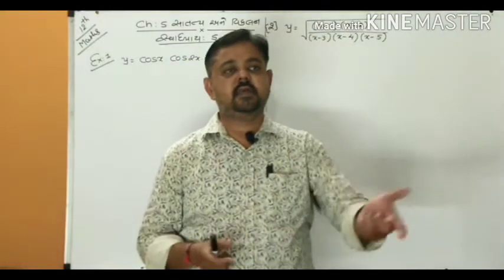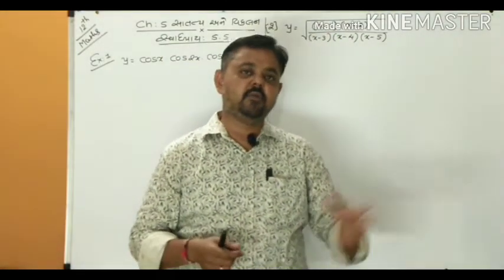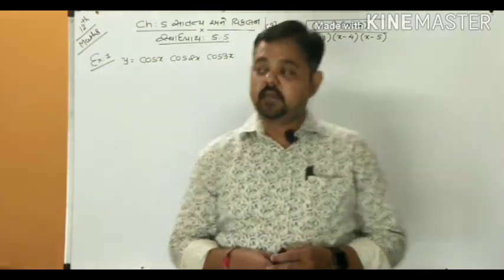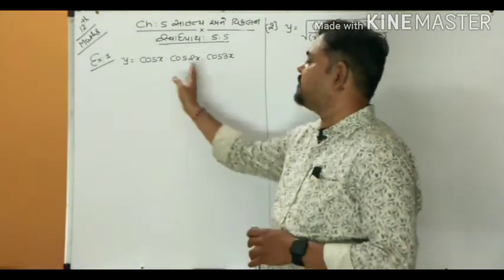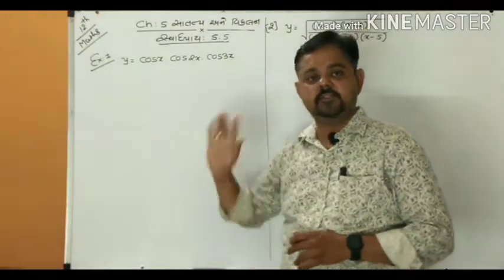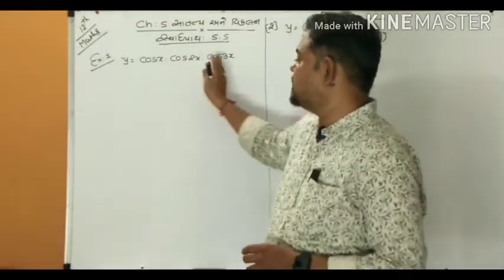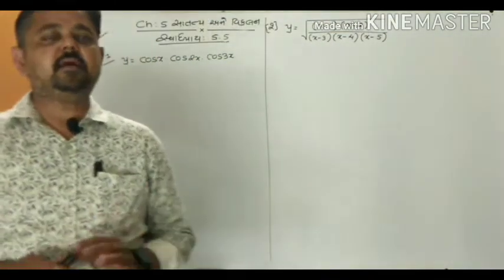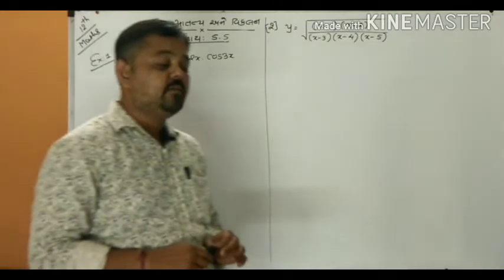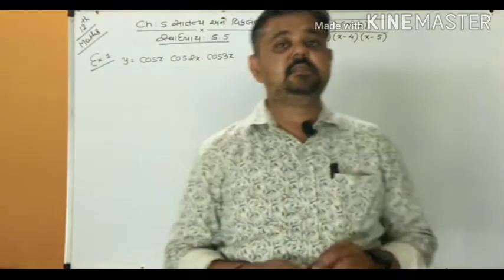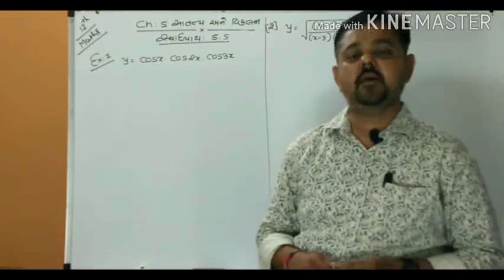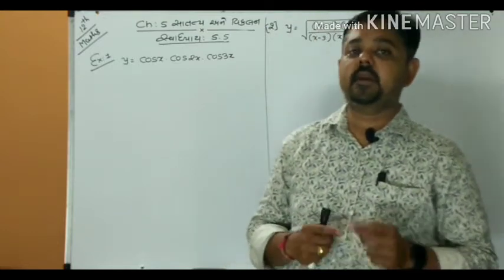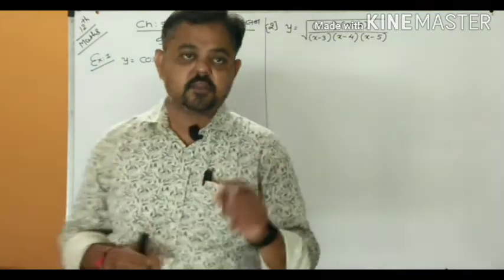The product rule states: first term constant times second term's derivative, plus second term constant times first term's derivative. For three terms: first two constant times third's derivative, plus first and third constant times second's derivative. However, when there are 3 or 4 functions multiplied, we take log instead, because applying log converts multiplication into addition.